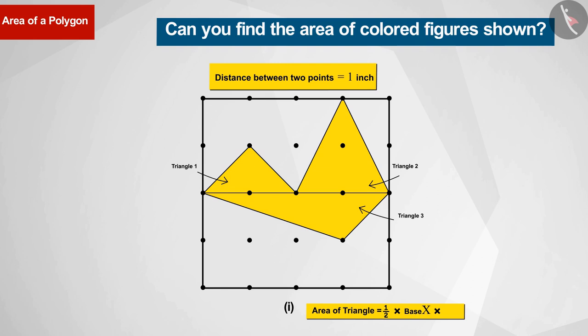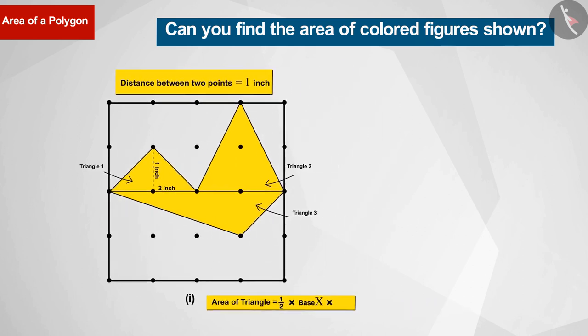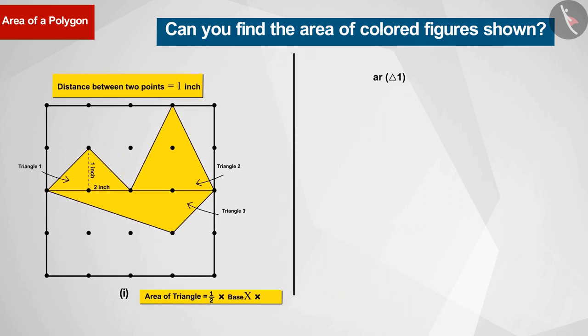Do we know the height and base measurement of triangle 1? From the information given in the question, we know that the distance between two points is 1 inch. From this we can say that the height of triangle 1 is 1 inch and the length of the base is 2 inches. With this we find the area of triangle 1, which is 1 square inch.